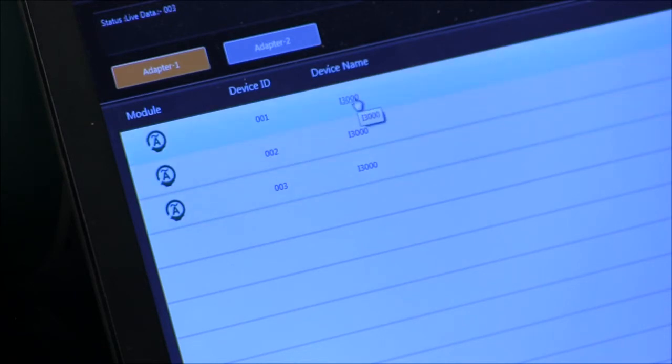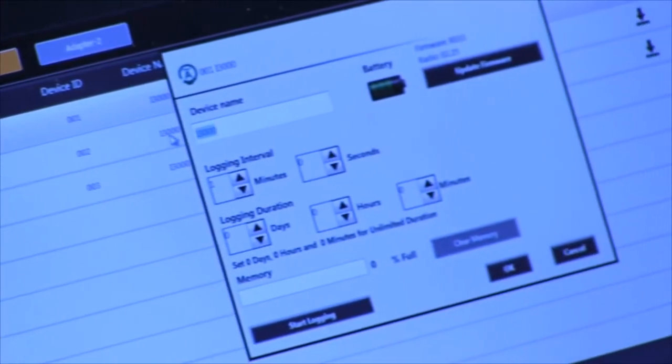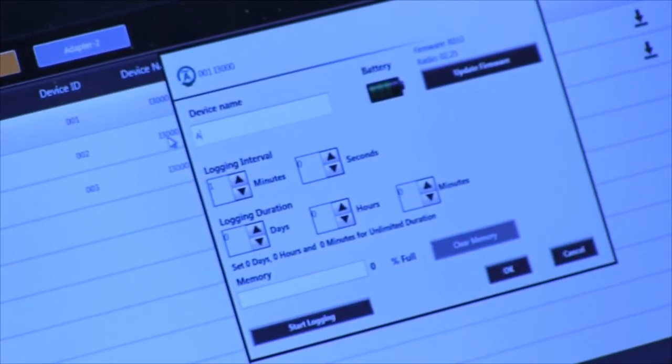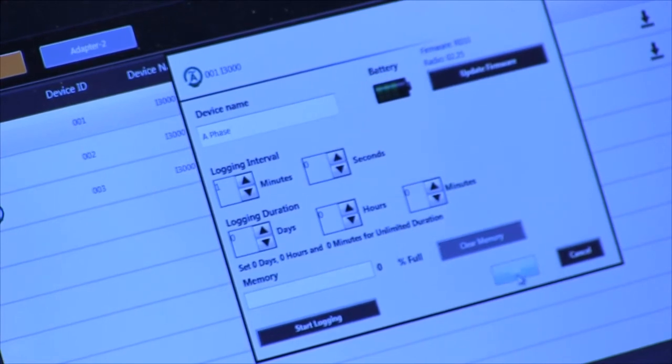From here, I can change the name on my device. Right now it's just called i3000. I can call it something as practical as A-Phase and then save that.